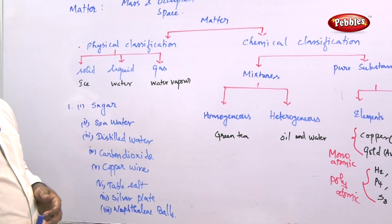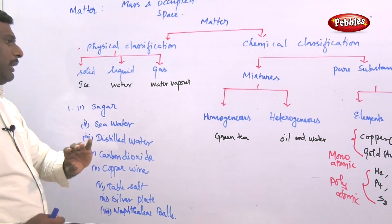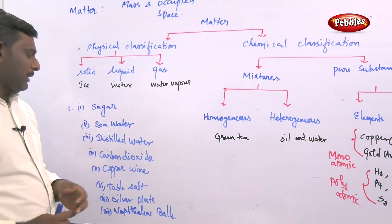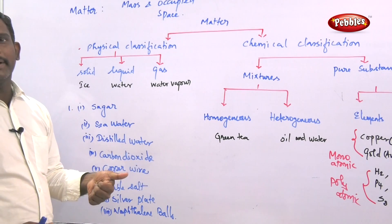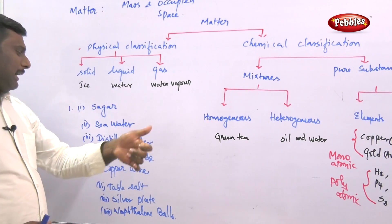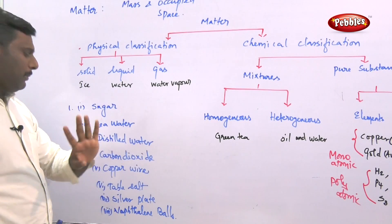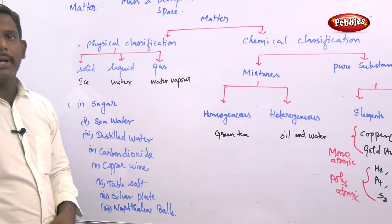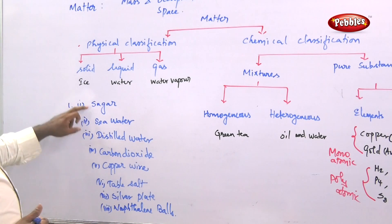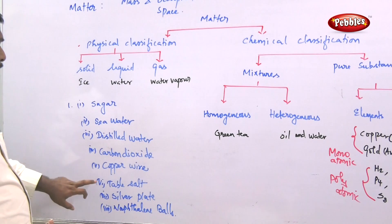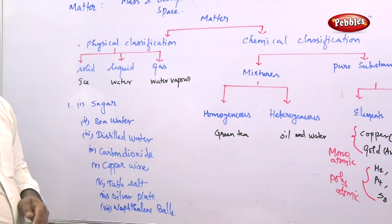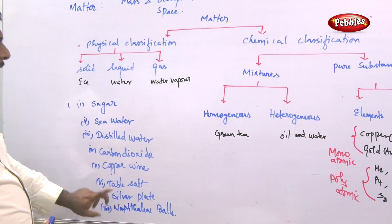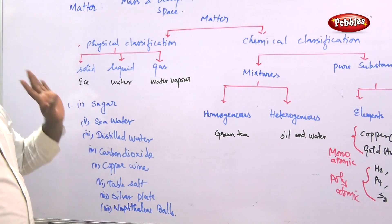Distilled water is a compound — it is a single entity. Carbon dioxide is also a single entity, so it is a compound. Copper wire: copper is a single atom, so it is considered to be an element. Table salt is sodium chloride, which is a compound. Silver plate: silver is one type of element, so it is classified as an element. Naphthalene balls: compound. Summary — compounds: sugar, distilled water, carbon dioxide, table salt, naphthalene balls. Elements: copper wire, silver plate. Mixture: sea water.